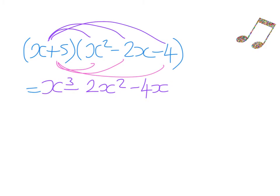Now we multiply each term by the 5. So 5 times 5x squared gives positive 5x squared. Then 5 multiplied by negative 2x — positive times negative — gives a negative answer: 5 times 2x is 10x, so negative 10x. And then positive 5 multiplied by negative 4 — positive times negative — gives a negative answer: 5 times 4 is 20, so negative 20.